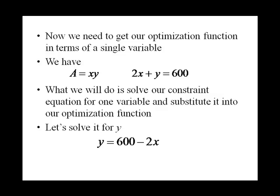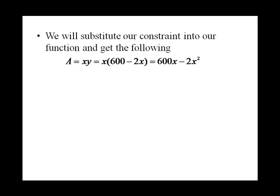Now, we're going to substitute that in for the y in our area function. So we get the following. The area in terms of x is 600x minus 2x squared.